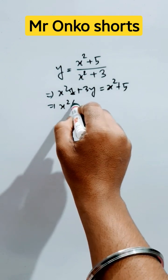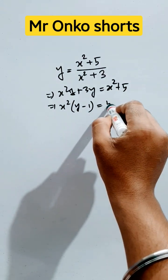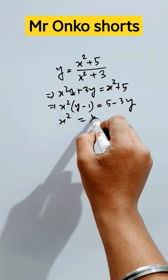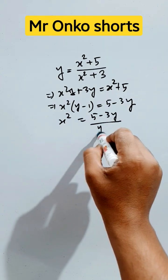So bring the x squares in the same position and take it common, then it will be like this. So x square will be equals to 5 minus 3y divided by y minus 1.